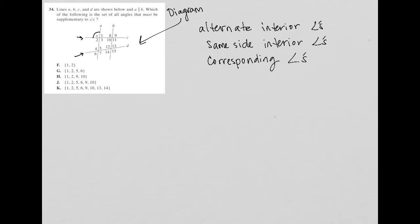So the next part of the question says, which of the following is the set of all angles that must be supplementary to angle X? All right, so if I'm focusing on angle X, then how do I know which other angles are supplementary?